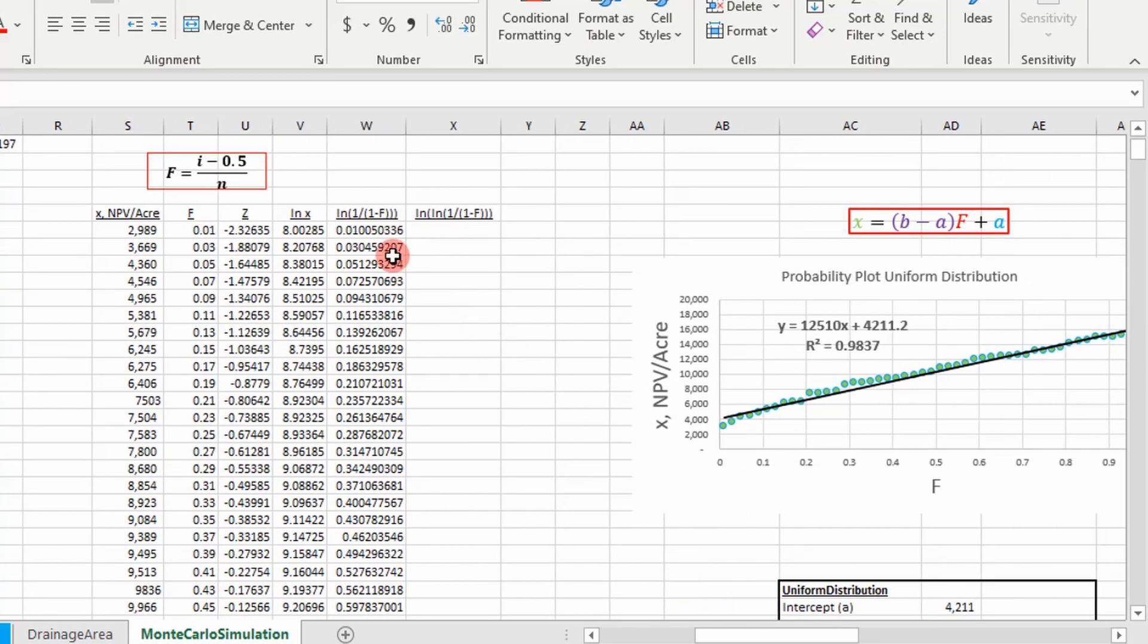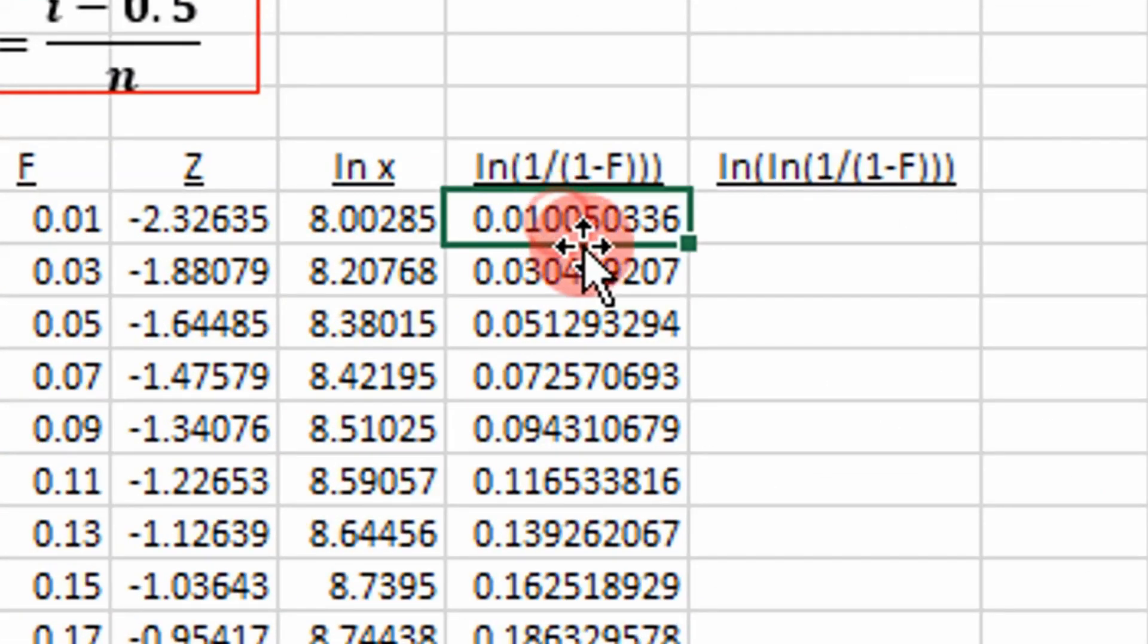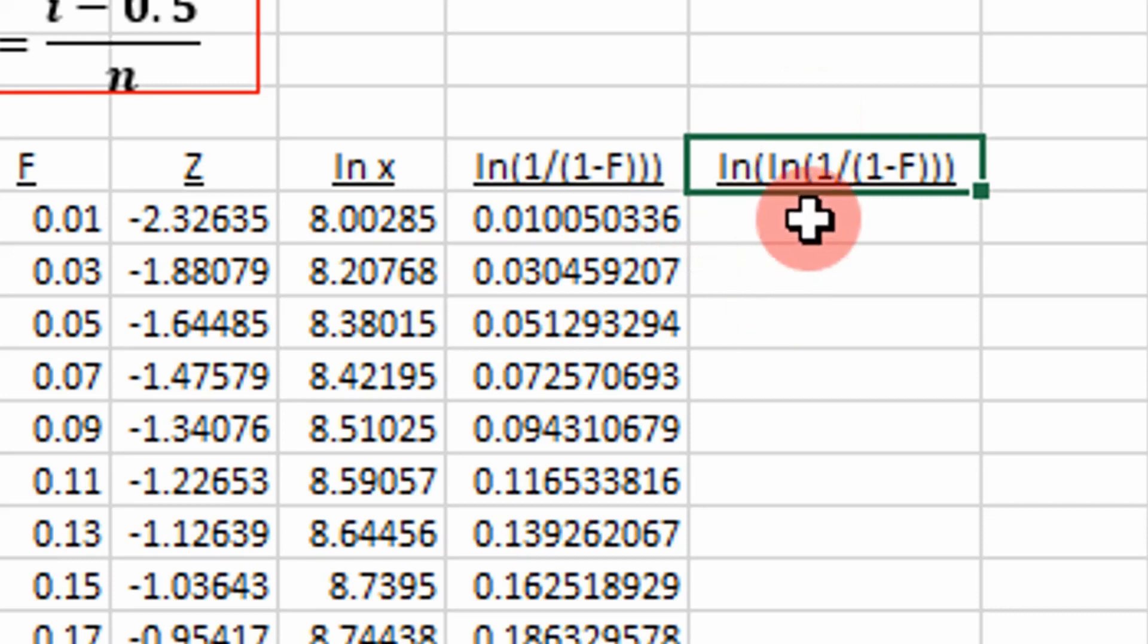In the previous video we looked at the exponential distribution. In order to fit it to the Weibull probability plot, all we need to do is take the natural log of this from the exponential distribution. If we do that, we'll get a series of values.